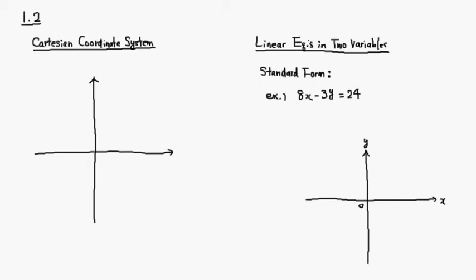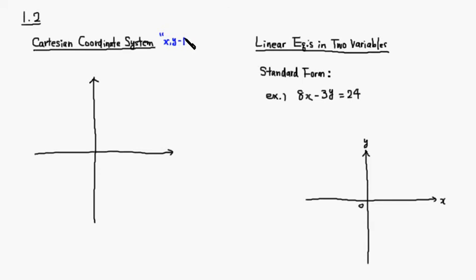Let's look at section 1.2. Let's talk about the Cartesian coordinate system. The Cartesian coordinate system is just a fancy word for the xy-plane, so I'll probably refer to it as the xy-plane.